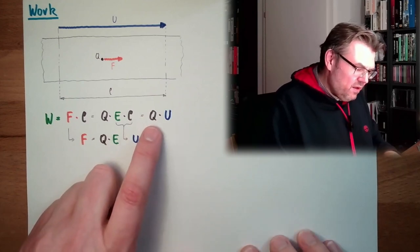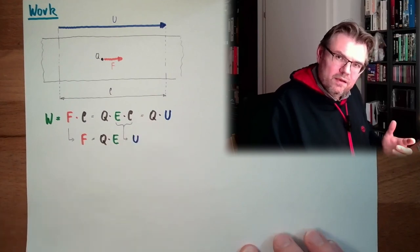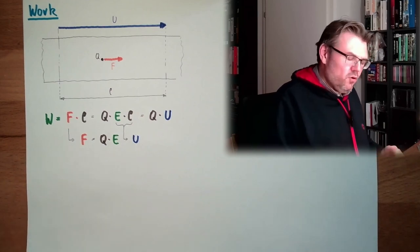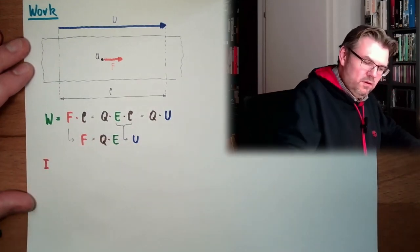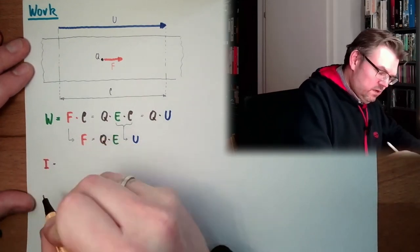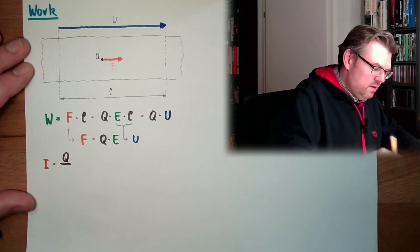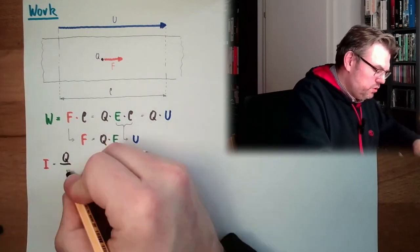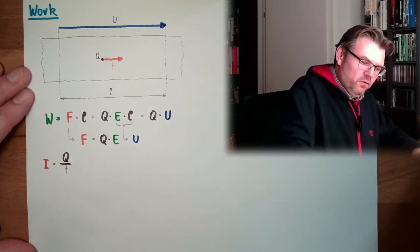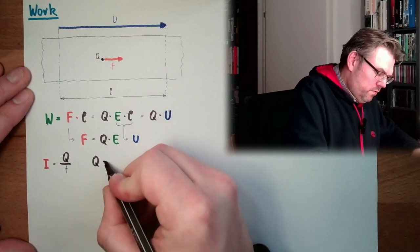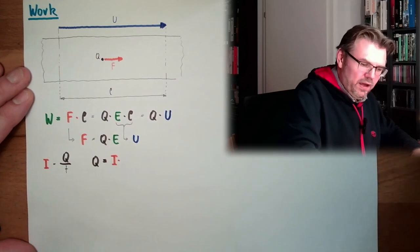So let's have a look how q and the current is combined. We said the current is coulomb per second, so current I equals the charge, the traveling charge q, divided by time t. So actually if we do here a translation, q equals current multiplied by the time t.